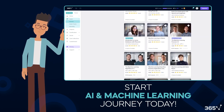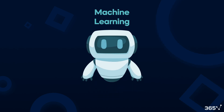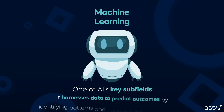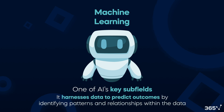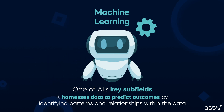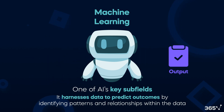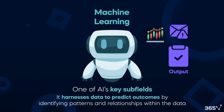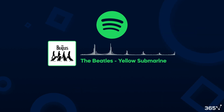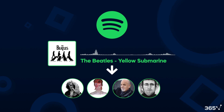Now, let's get back to what distinguishes AI, ML, and data science from one another. Machine Learning, or ML, is one of AI's key subfields. It harnesses data to predict outcomes by identifying patterns and relationships within the data. Much like a math function, we feed input data to an ML model, which processes and produces an output. The output can range from predicting stock prices, to classifying an email as spam, to recommending a product. Have you noticed how music streaming apps suggest similar artists while you listen to your favorite songs? That's machine learning helping you discover new music.